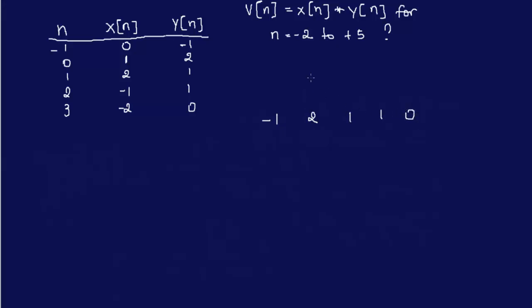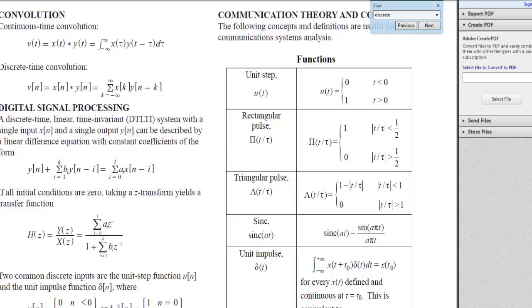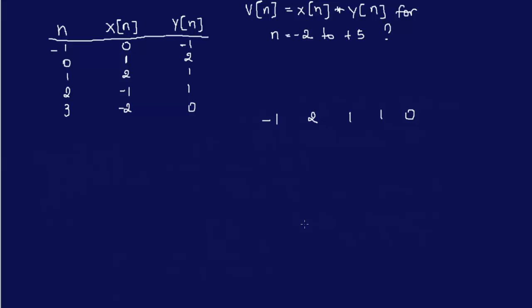So if we shift the X of n, we have minus 1, 2, 1, 1, and 0. And if we look at n minus k, that means we are shifting it to the right, correct, to the right.